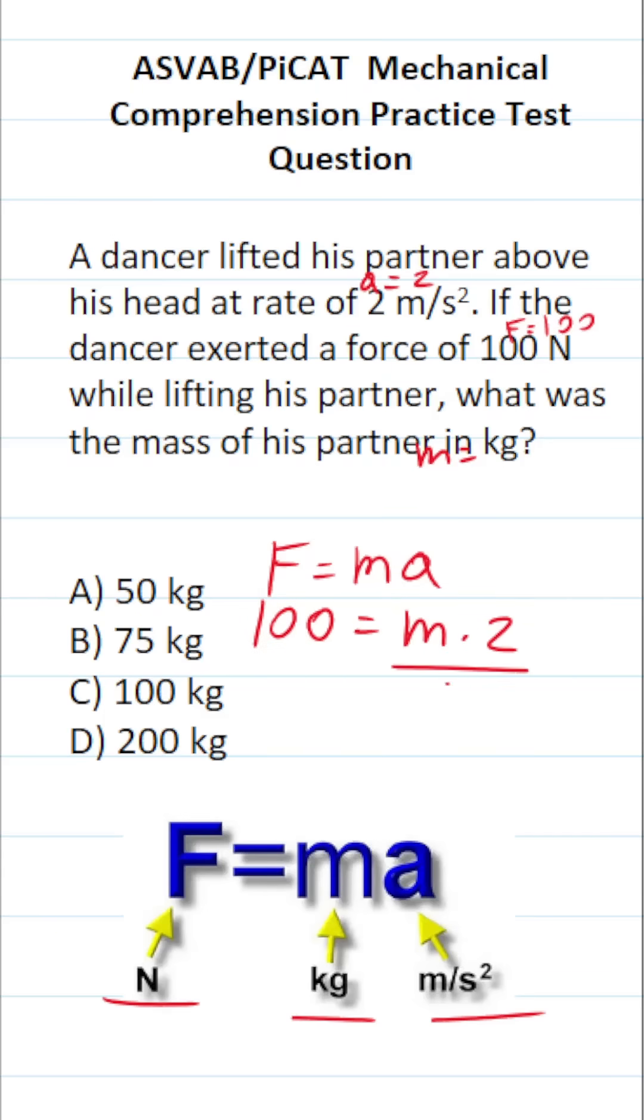To solve for mass or m, we divide both sides of this equation by 2. In doing so, this crosses out, leaving you with m on this side. 100 divided by 2 is 50.